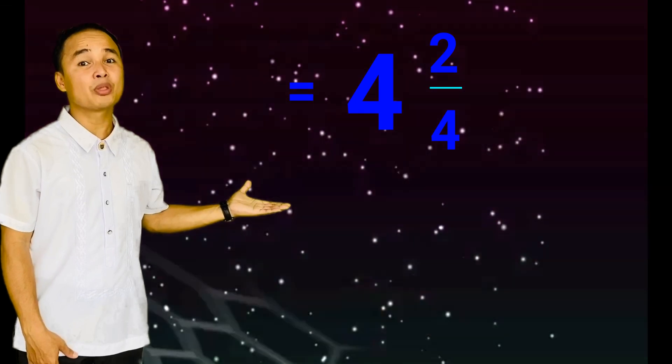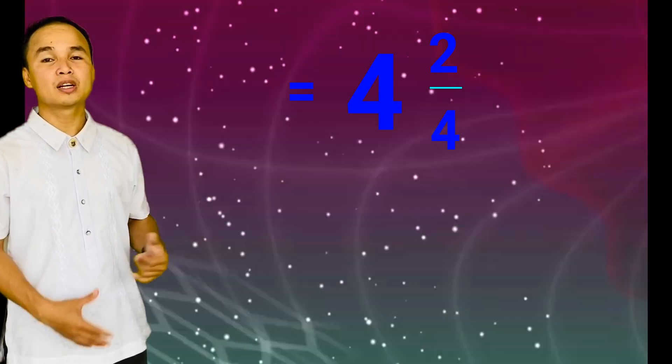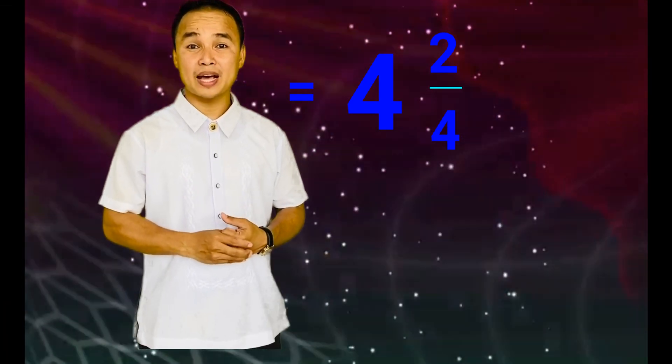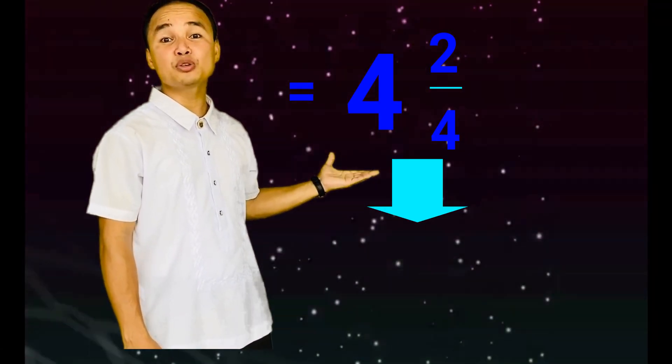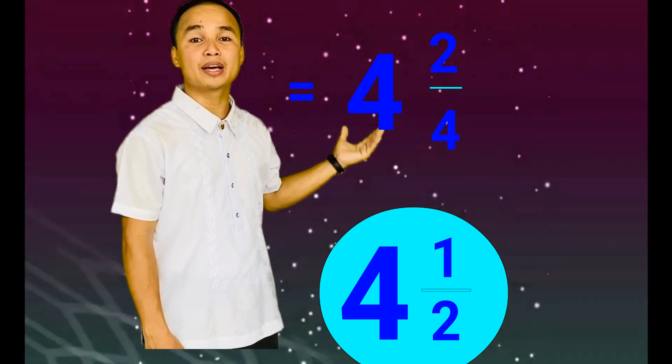So we get the answer 4 and 2 fourths. The next step is to simplify the answer to lowest term if possible. In this case, we can simplify 4 and 2 fourths to 4 and 1 half. Which is our final answer.